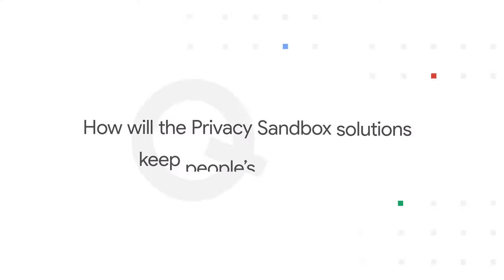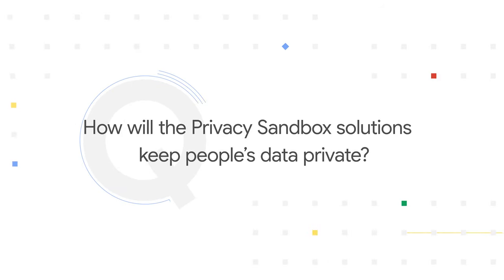All right, let's talk about how it's done. Question one: how will the privacy sandbox solutions keep people's data private? The technologies that make this possible are based on privacy strategies like differential privacy, K-anonymity, and on-device processing. They are innovative, they're user-focused, and they're proven to be effective.